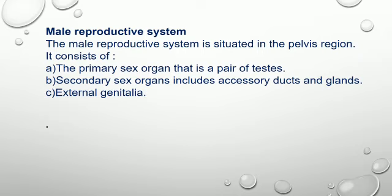The male reproductive system is situated in the pelvis region. It consists of the primary sex organ, i.e., a pair of testes. Secondary sex organs include accessory ducts and glands, and external genitalia.